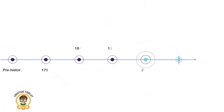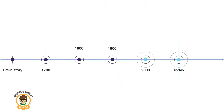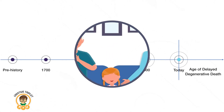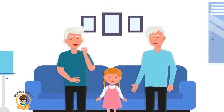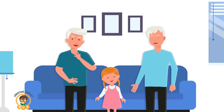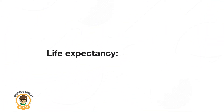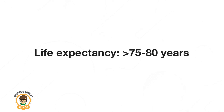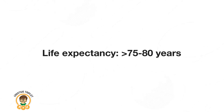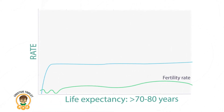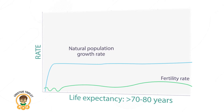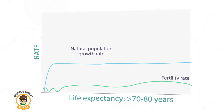In 1986, Olshansky and Ault updated Omran's theory to add in a fourth stage: the age of delayed degenerative death. In this stage, which some populations are currently experiencing, life is sustained due to medical technology and death is delayed. This has the effect of further increasing life expectancy, and some countries, particularly high-income ones, have averaged life expectancies in excess of 75 to 80 years. Fertility in these populations is very low, and the population growth rate from births and deaths alone is stagnant.